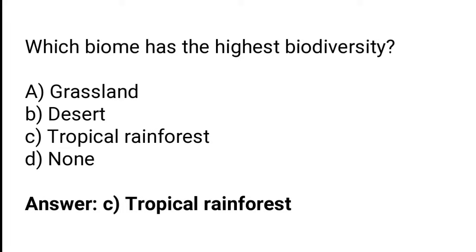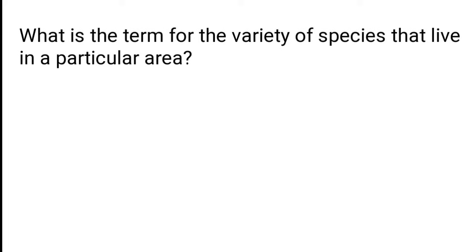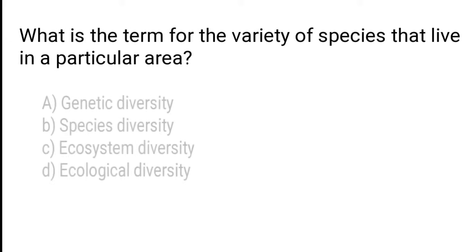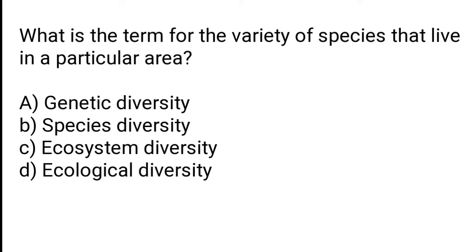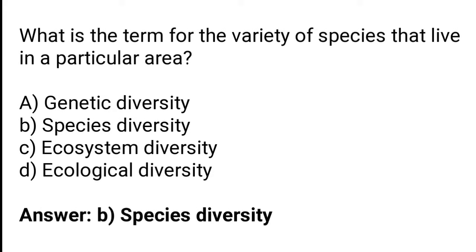What is the term for the variety of species that live in a particular area? A) Genetic diversity, B) Species diversity, C) Ecosystem diversity. The correct answer is option B — species diversity is the term for the variety of species that live in a particular area.